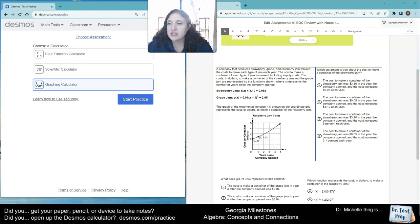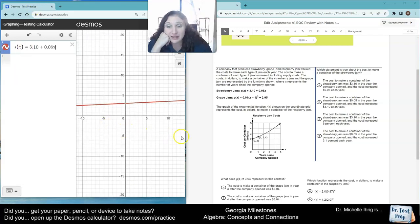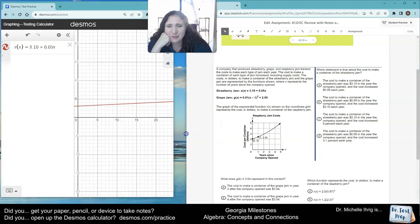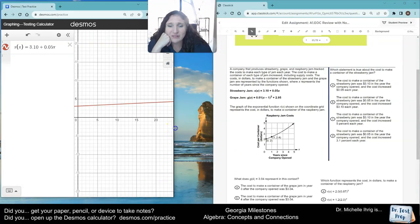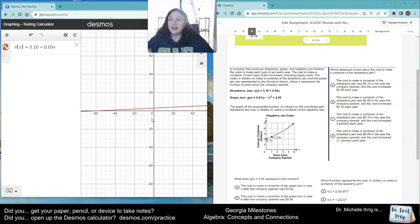So which statement is true about the cost to make a container of strawberry jam? Well, it says strawberry jam, so I'm going to open up the graphing calculator and I'm going to type in the strawberry jam recipe. S of X equals 3.10 plus 0.05X. Now when I look at this, I'm like, that's a straight line. Why are they giving me a straight line? Well, they're giving us a straight line because it's a linear graph. It goes up not by multiplying, by adding. So this first graph right here is actually linear.